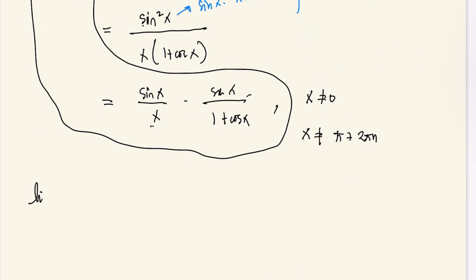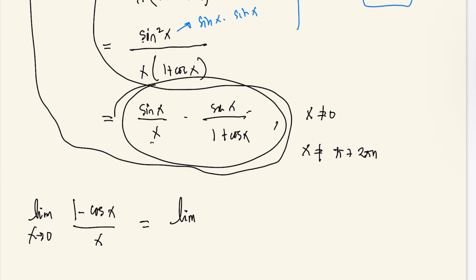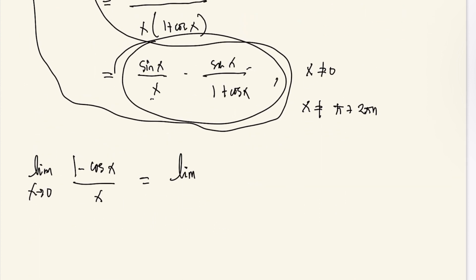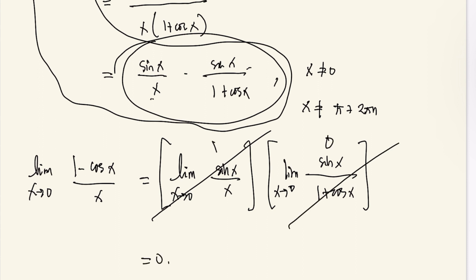Taking the limit of both sides, the limit of 1 minus cosine x all over x as x approaches 0 equals the limit of sine x all over x as x approaches 0, multiplied by the limit of sine x all over 1 plus cosine x as x approaches 0. The first limit is 1, and the second evaluates to 0, so the answer is 0. Therefore, we have established our theorem.